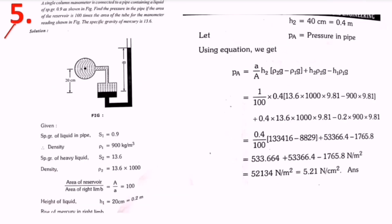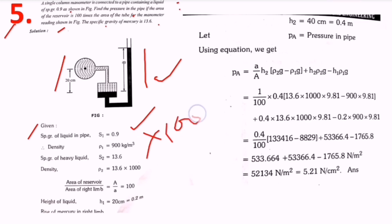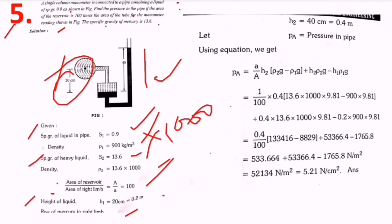Fifth question: a single column manometer is connected to a pipe containing liquid of specific gravity 0.9, as shown in the figure. The area of the reservoir is 100 times the area of the tube. Specific gravity of mercury is 13.6. From the figure, h1 is 20 centimeters (0.2 m) and h2 (rise of mercury in the right limb) is 40 centimeters (0.4 m). Oil density is 900 kg/m³ and mercury density is 13,600 kg/m³.